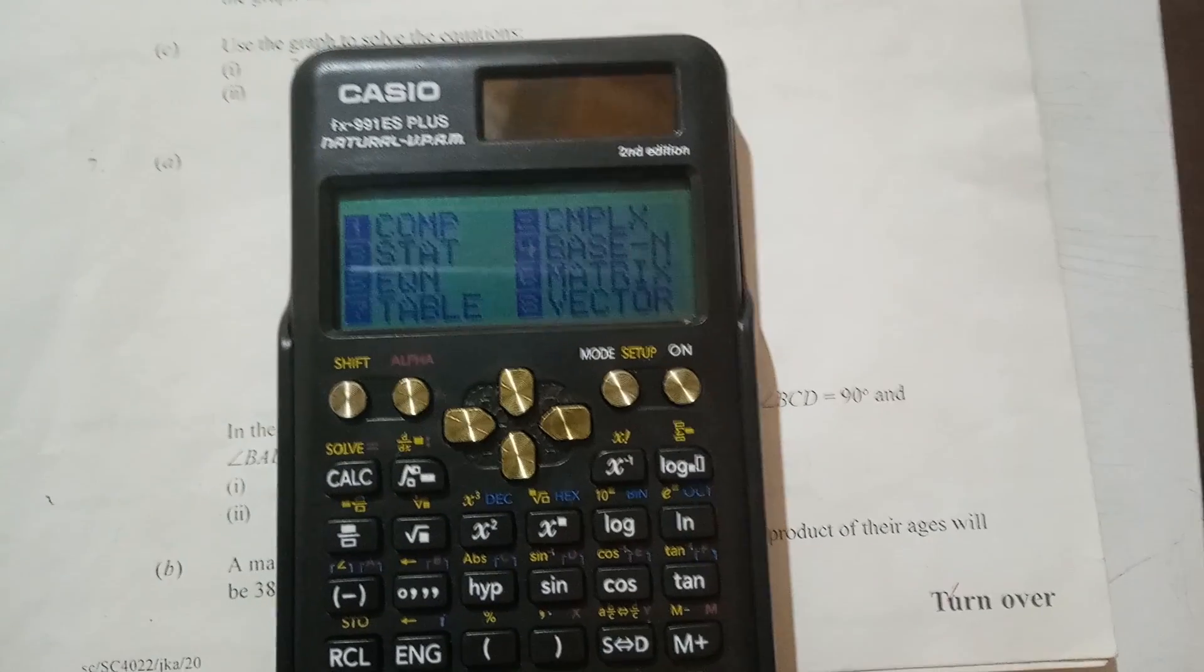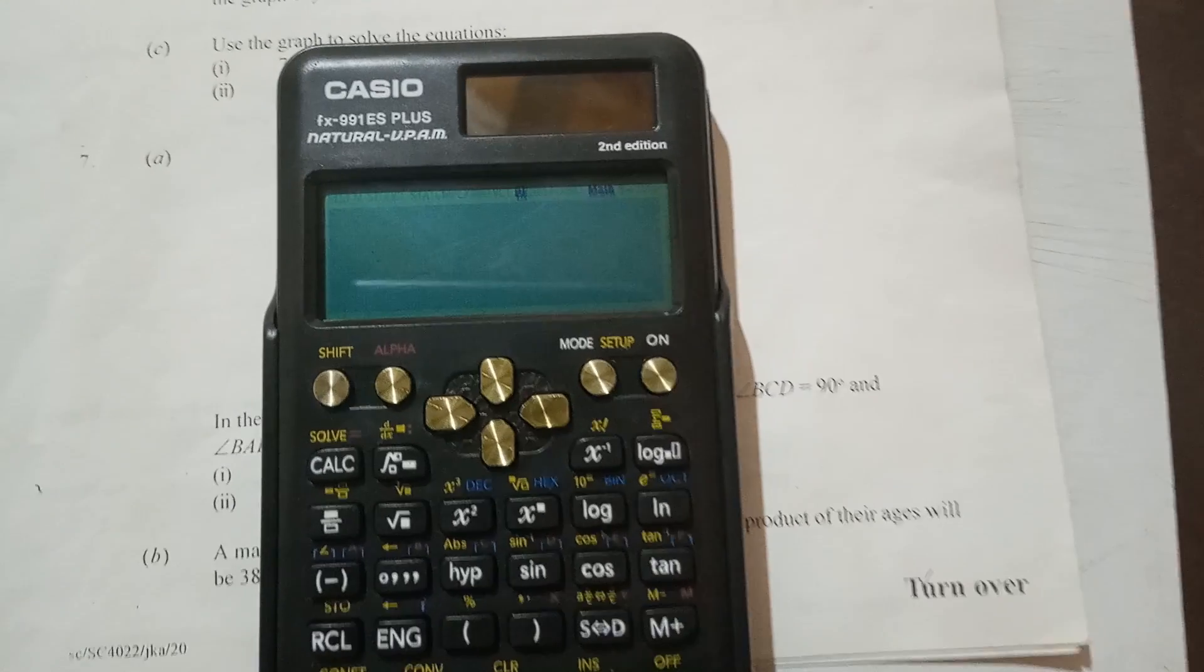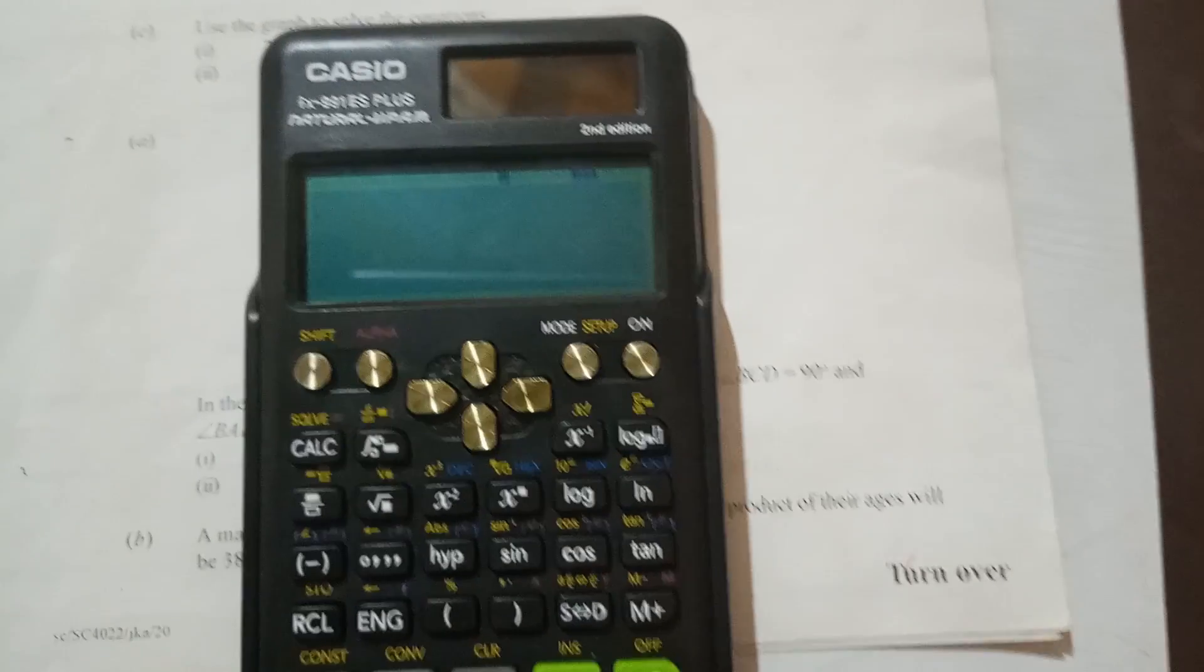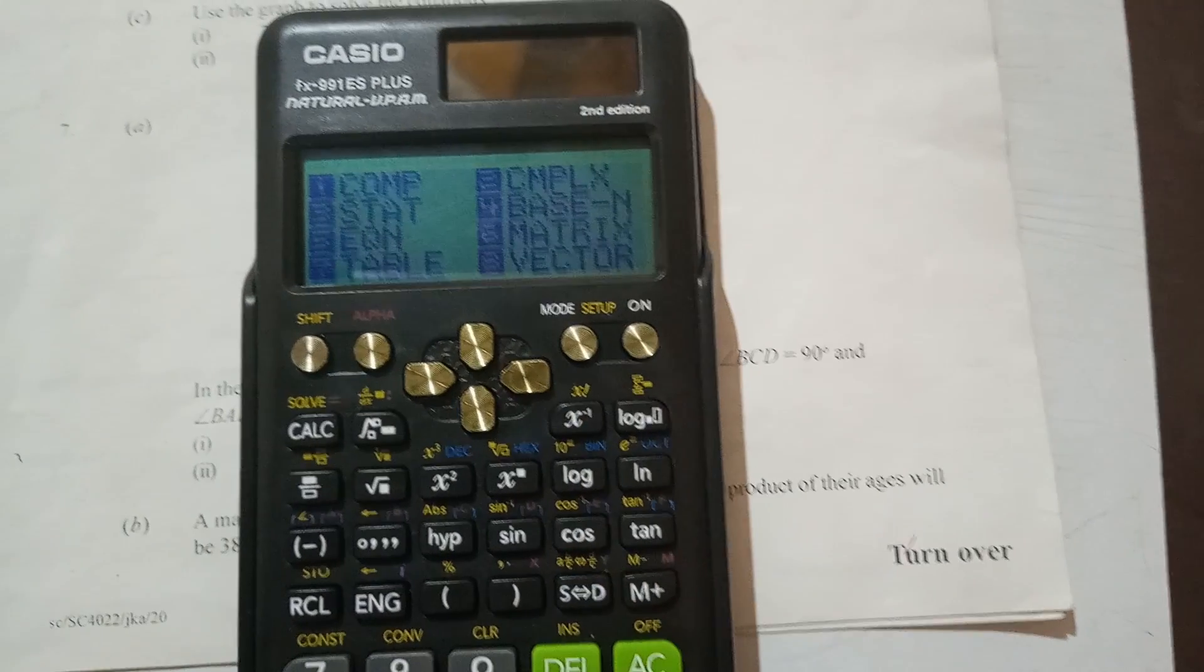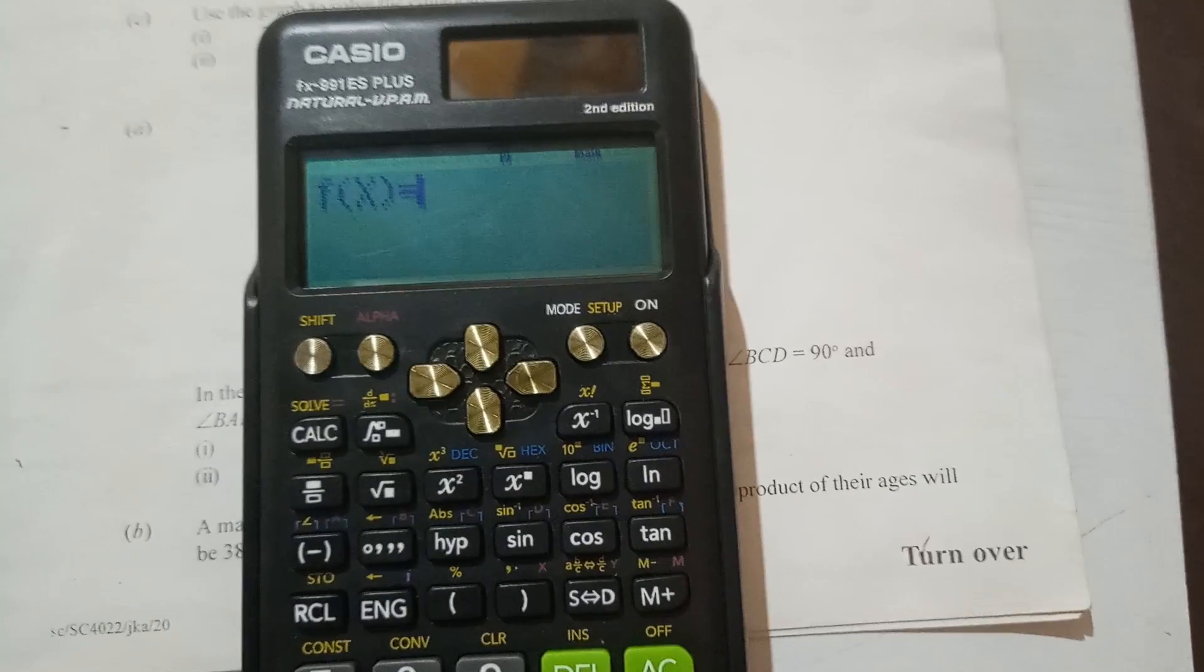So I'll go to mode 1 for the calculator to be in simple calculation mode. Then now we start the whole process again. So mode, we look for table, which is number 7. Then our f of x has come.